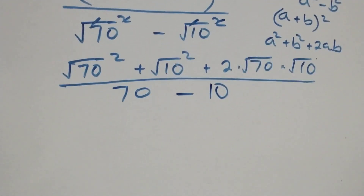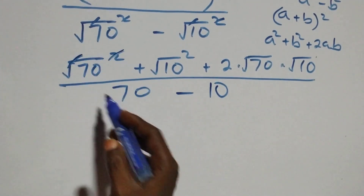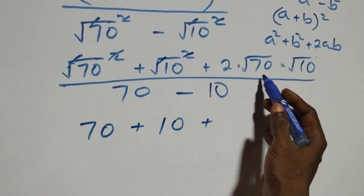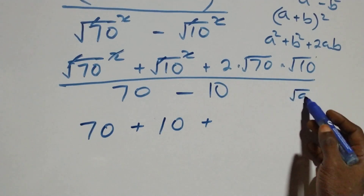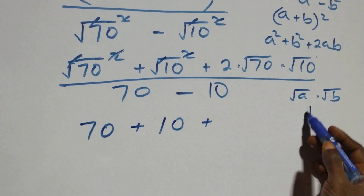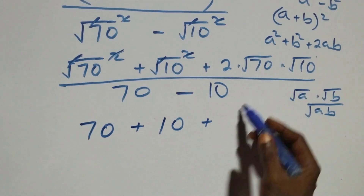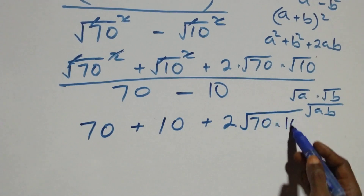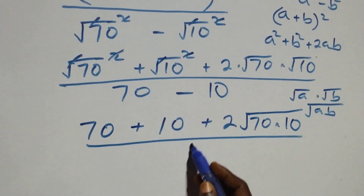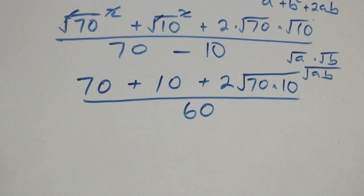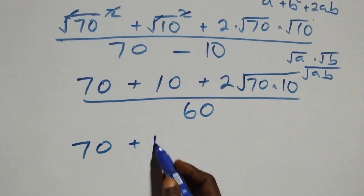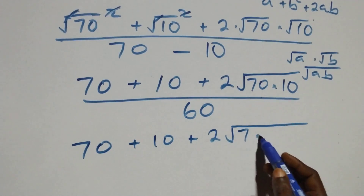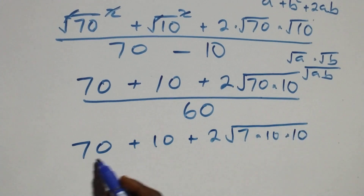So the numerator is 70 + 10 + 2 times √(70 × 10). When we have √a times √b brought together we get √(a×b), so √70 times √10 = √700. We can simplify √700 = √(100 × 7) = 10√7. So this becomes 70 + 10 + 2 times 10√7, divided by 60.